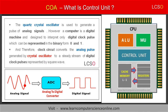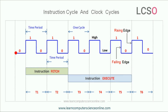However, the computer is a digital machine and it needs digital signals that can be represented with the binary code. The analog signals generated by the quartz oscillating crystal are converted into digital signals by an analog-to-digital converter. The timing unit controls the processing speed of the processor by controlling the clock speed, which effectively controls the speed of the machine cycle.